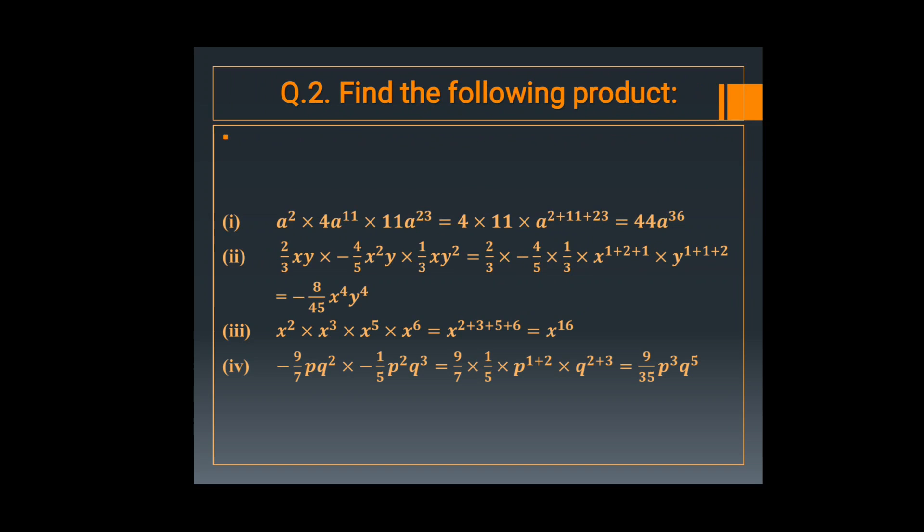Now in question number 2 of this set: 2 upon 3 XY multiplied by minus 4 upon 5 X square Y, then multiply by 1 upon 3 XY square. First, multiply the numerical coefficients: 2 upon 3 multiplied by minus 4 upon 5 multiplied by 1 upon 3. The product is minus 8 upon 45, and adding the powers of X and Y each gives X raised to the power 4 into Y raised to the power 4.